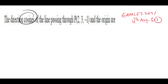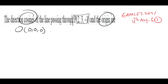Next problem: find the direction cosines of the line passing through P(2, 3, −1) and the origin. This is MSet 2021, 4th August, Shift 1. The origin O is (0, 0, 0) and point P is (2, 3, −1). First we find the direction ratios (DRs): a, b, c.